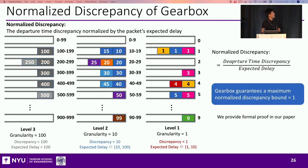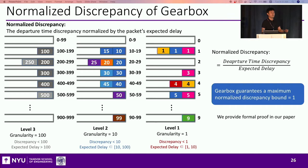Let's revisit the normalized discrepancy that Gearbox provides. Since we treat different packets with different expected delays using different granularities, in Gearbox the expected delay is always greater than or equal to the departure time discrepancy. This means we can guarantee a maximum normalized discrepancy bound of one — in the worst case, a packet will experience extra delay at most equivalent to its expected delay.